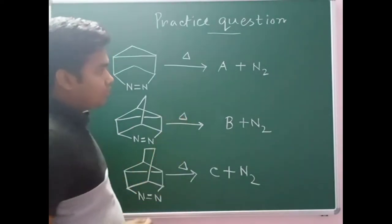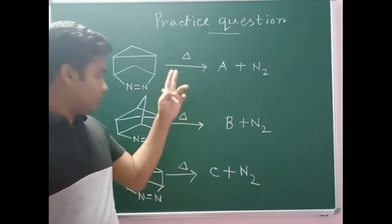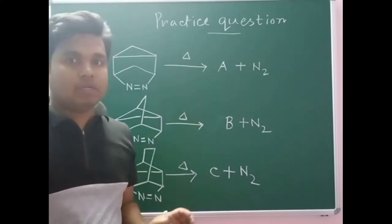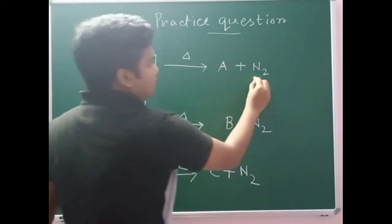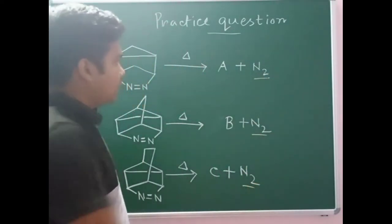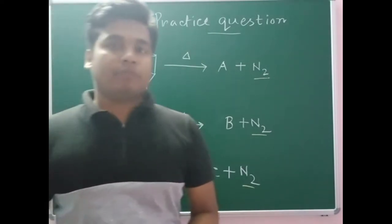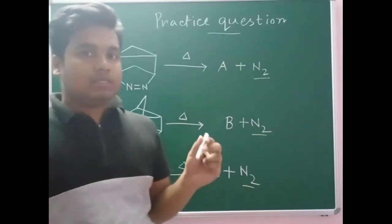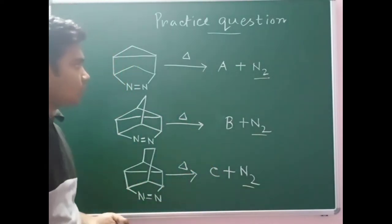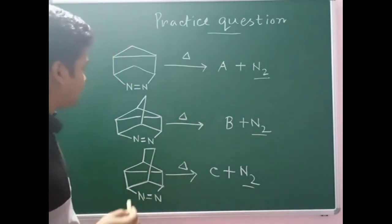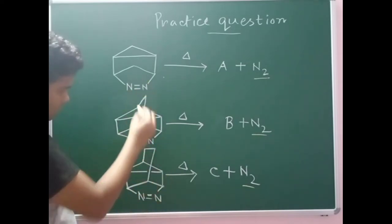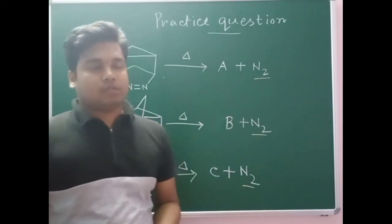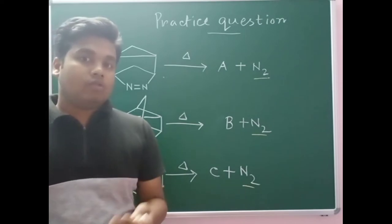The question is that three same kind of starting materials are given with the same condition — heat — and in every case nitrogen will be found and three products will be found. We have to write the decreasing order of the rate of forming of these three compounds. Before solving this, I want to mention that these compounds came from the homo Diels-Alder reaction.